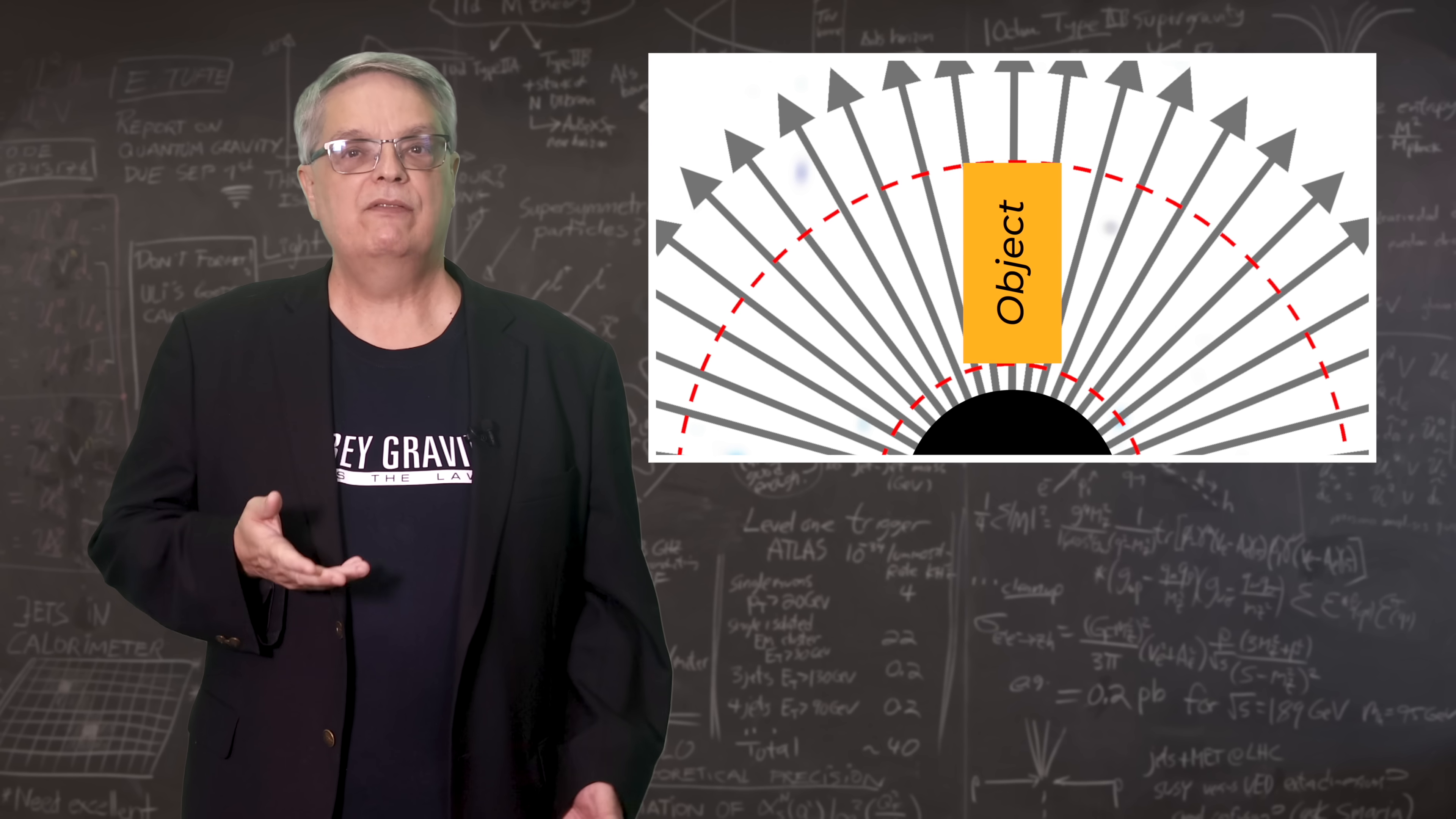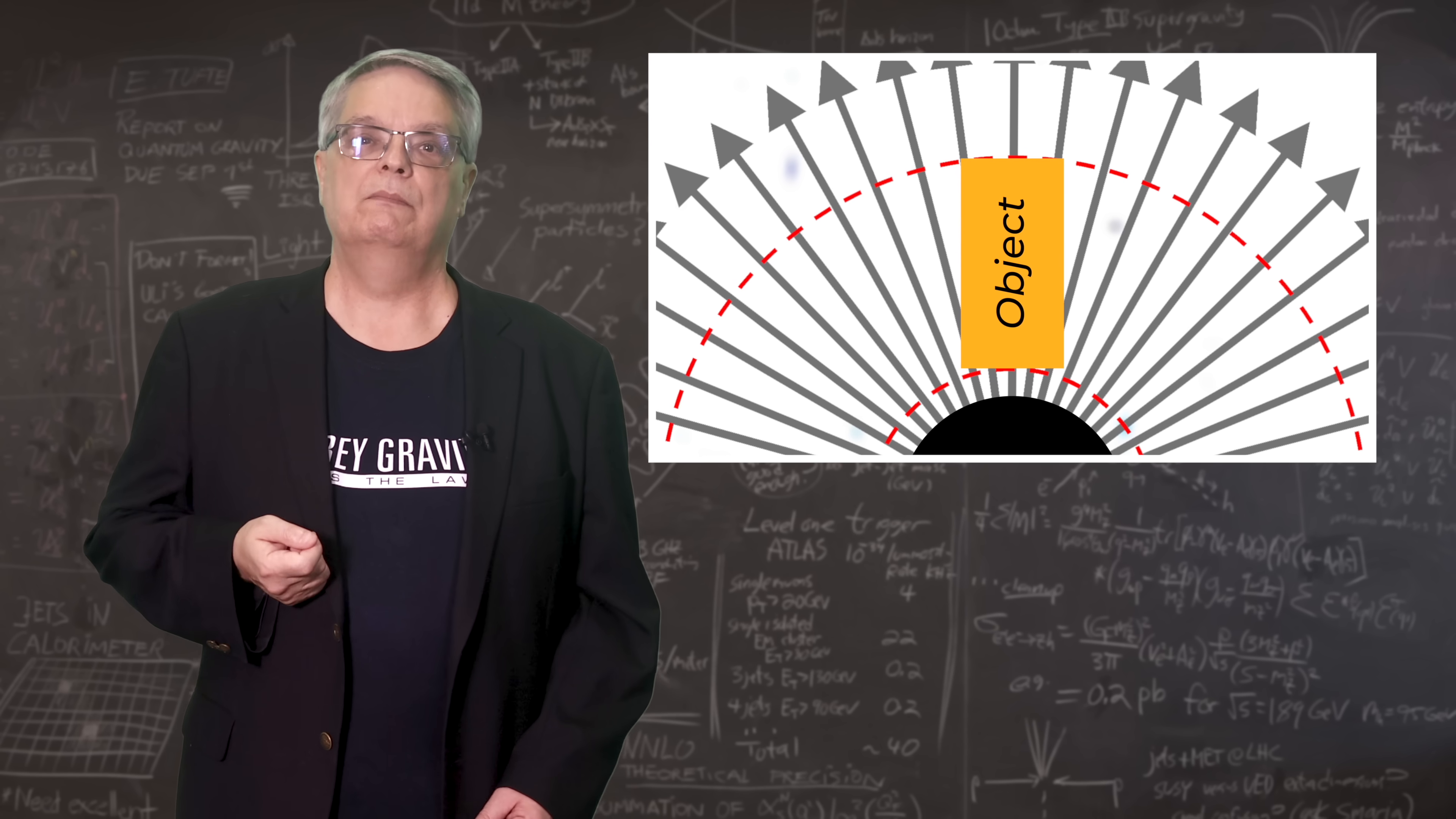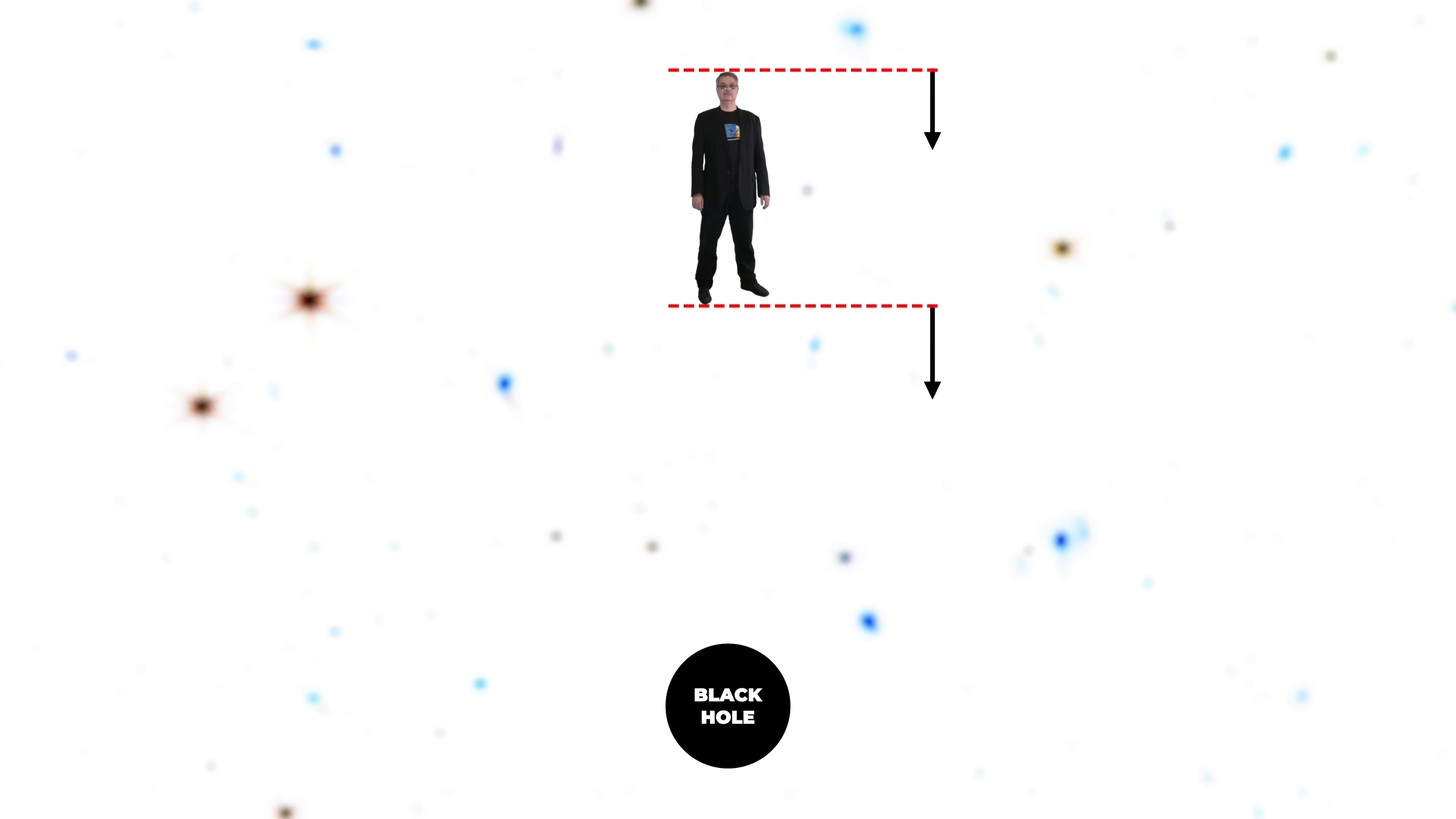This means that the gravity tugging the bottom of the box is stronger than the gravity tugging at the top. So, suppose a volunteer was falling feet first into a black hole. His feet would be pulled harder than his head and you would get stretched out.